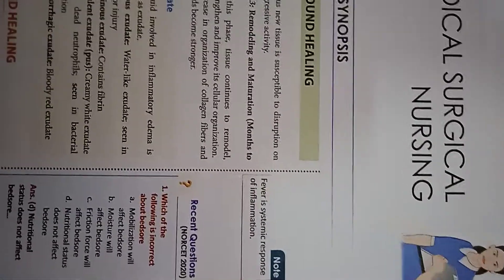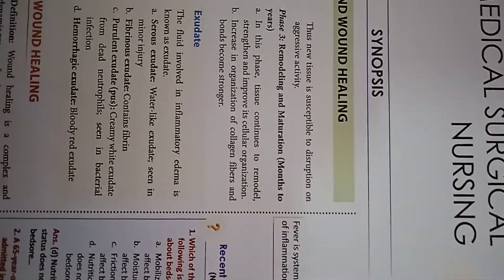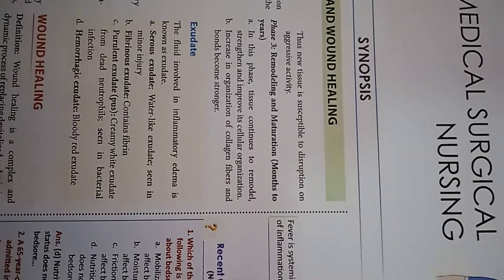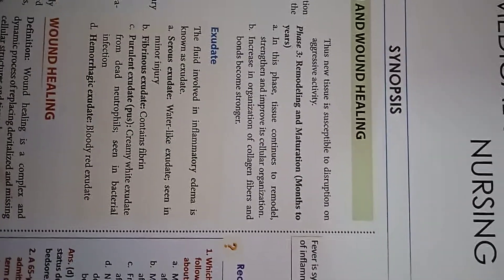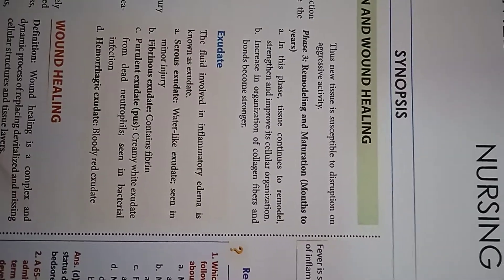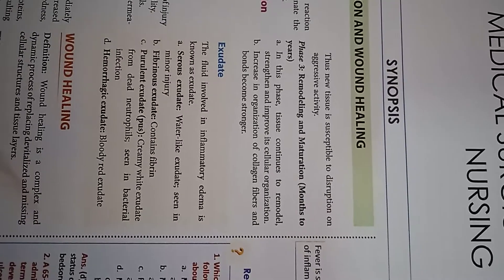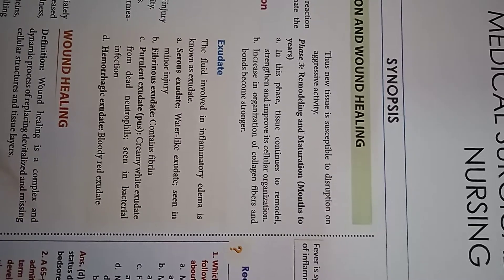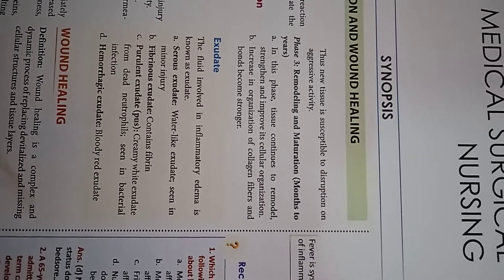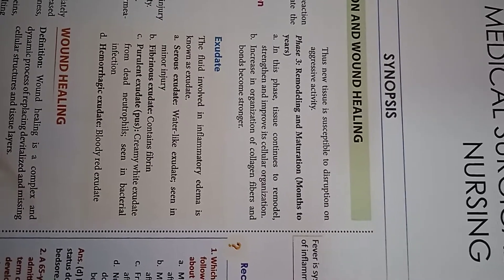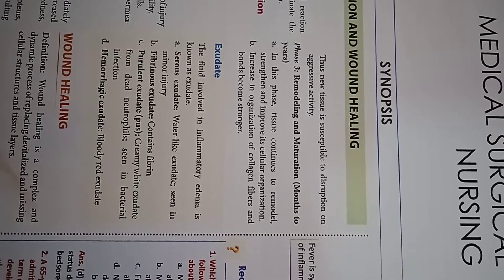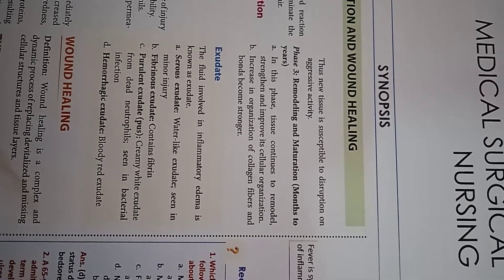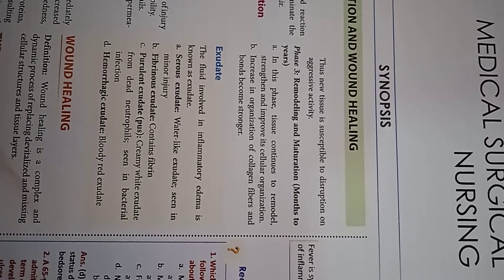Phase 3 is remodeling and maturation. It happens over months to years. In this phase, the tissue continues to remodel, strengthen and improve its cellular organization. The increase in the organization of collagen fibers means the tissue becomes stronger.